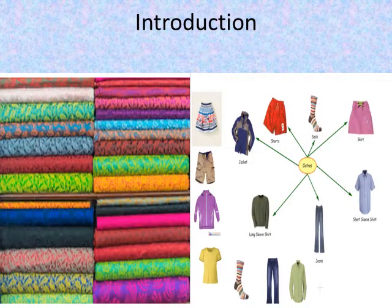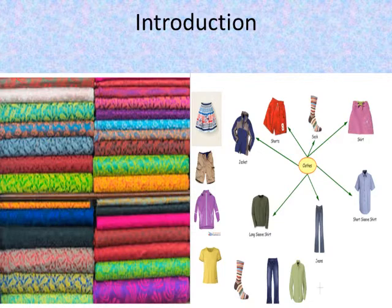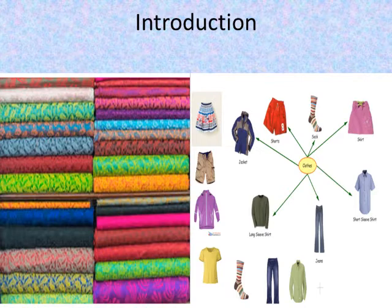In earlier class, we have learnt that the clothes we wear are made up of a variety of fabric. Clothing is one of the basic needs of life. It protects us from dust, insect bites, and also different kinds of weather conditions. The type of fabric we wear depends upon the climate of the place we live in. In summer, thin light-colored cotton clothes are preferred, because cotton allows movement of air and absorbs sweat.